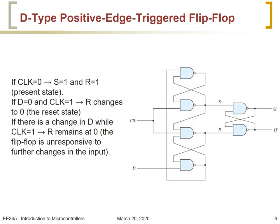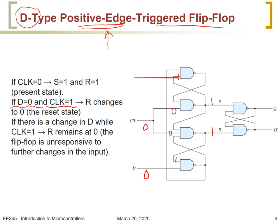Let's look at the other type of flip-flop: the positive edge-triggered flip-flop. From the name, we expect that data D will appear at the output when the clock goes from 0 to 1. First, assume the clock is 0 — S will be 1 and R will be 1. Now if D is equal to 0 and the clock goes from 0 to 1, R will change from 1 to 0.